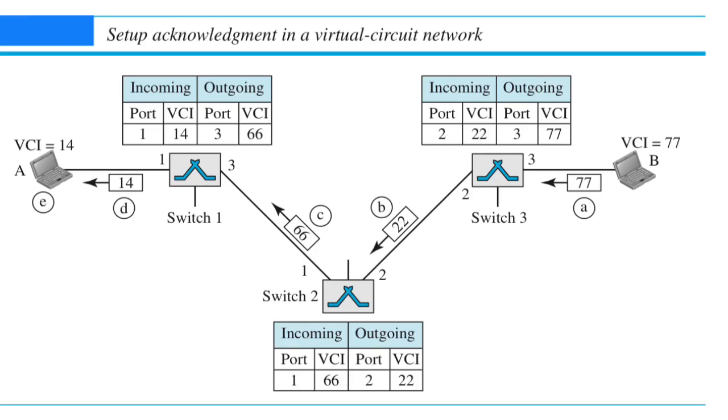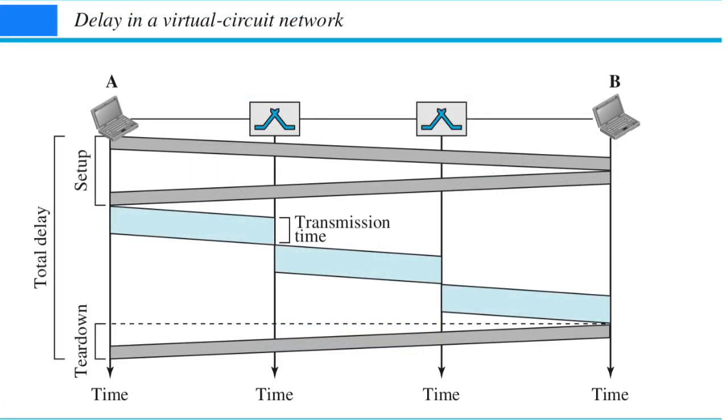Here, small a, b, c, d, e are the steps in acknowledgement and switch 1, switch 2, switch 3 are the switches included in this communication. In this diagram, we can calculate the total delay of the virtual circuit communication. We have time for setup and then transmission and at last tear down. Also, you can observe that here there are two switches included in this communication.